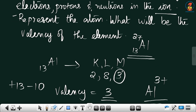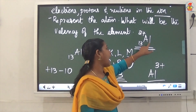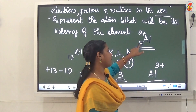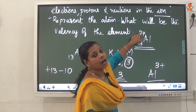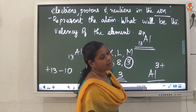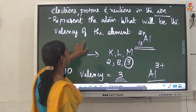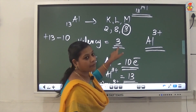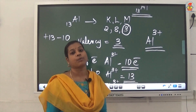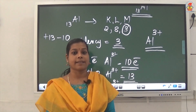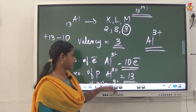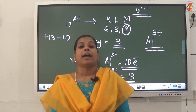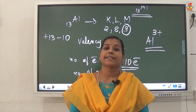The representation of the atom has atomic number 13 on the lower left and mass number 27 on the top left. The valency of aluminium is 3, and after losing 3 electrons it converts to Al³⁺. I hope today's topic is clear to you. Thank you.